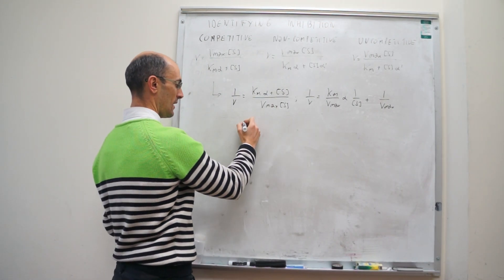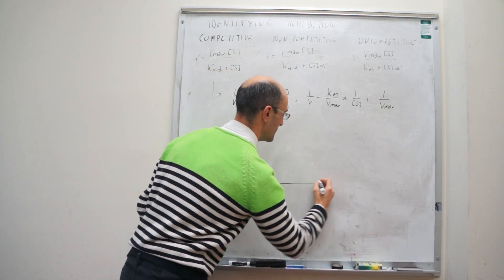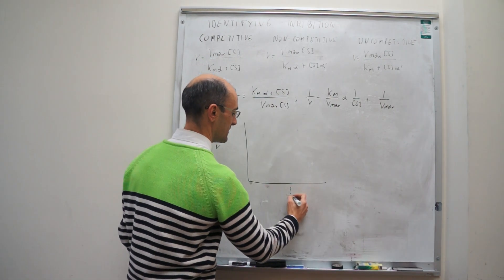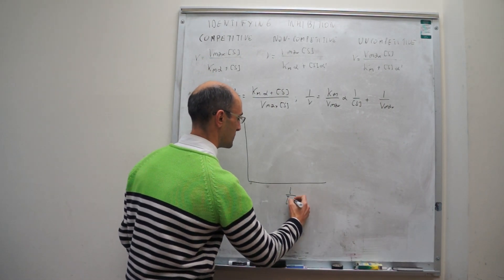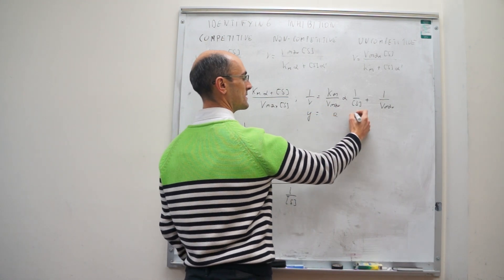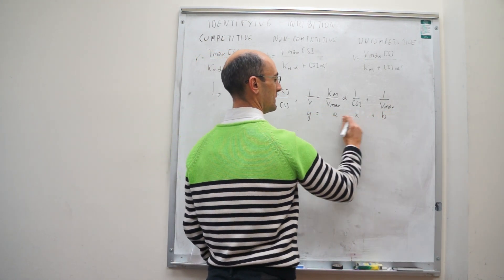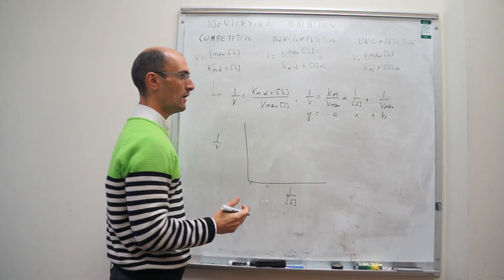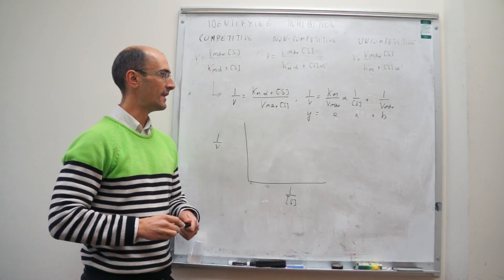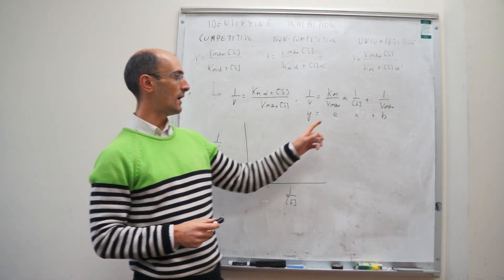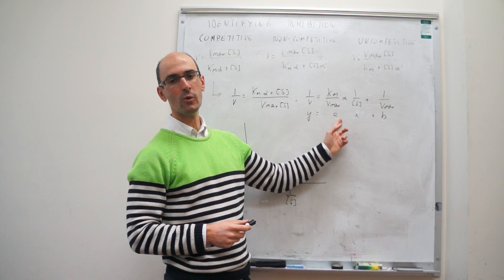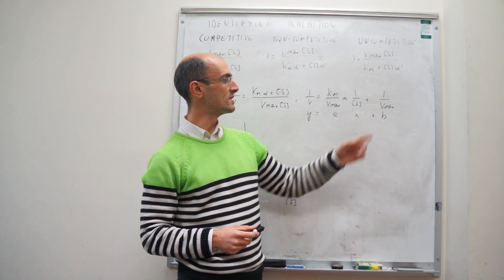In the Lineweaver-Burk plot, 1/V is on the y-axis and 1/[S] is on the x-axis. Looking at this equation, the slope is (K_M/Vmax) × alpha and the intercept is 1/Vmax. Comparing to the uninhibited Lineweaver-Burk expression, the only difference is the alpha term, and that only affects the slope — the intercept doesn't change.